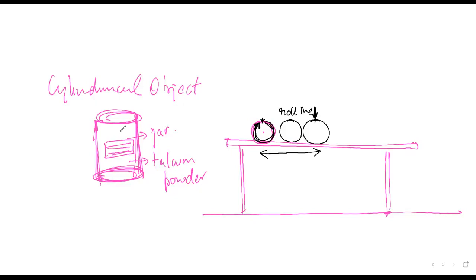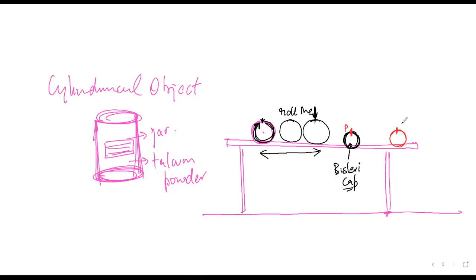If you don't find a cylindrical jar, all you can do is take a Bisleri cap — it's a bit small in size but the logic remains the same. Put the Bisleri cap like this on the table and roll it, giving it one round. You can mark a point on the cap. When it completes a full circle — when this point P comes on the top again — this distance will be equal to this distance.